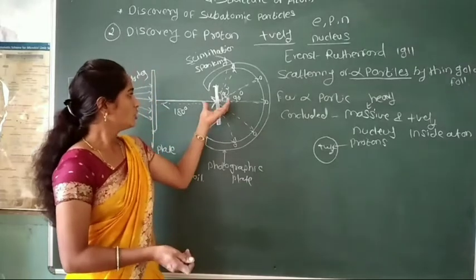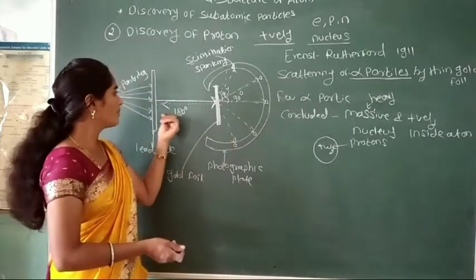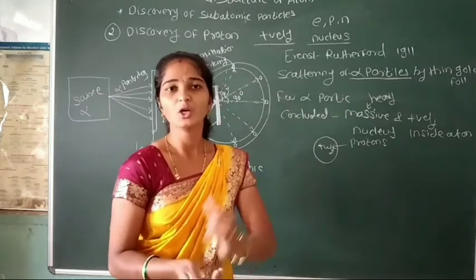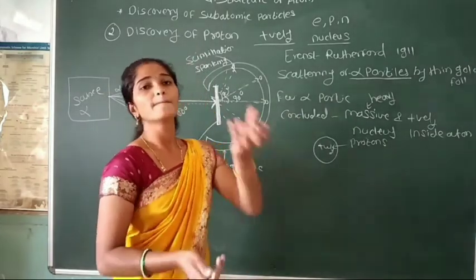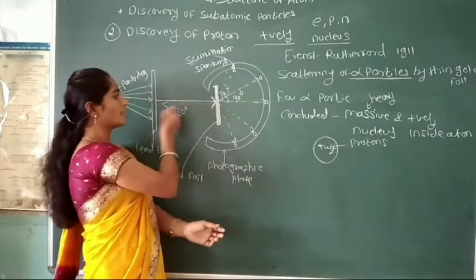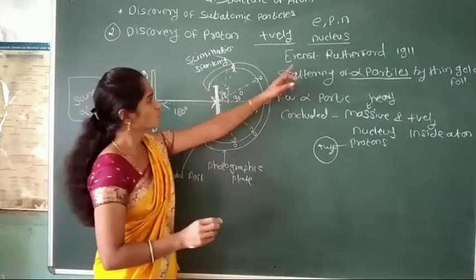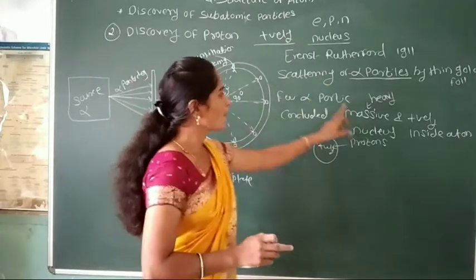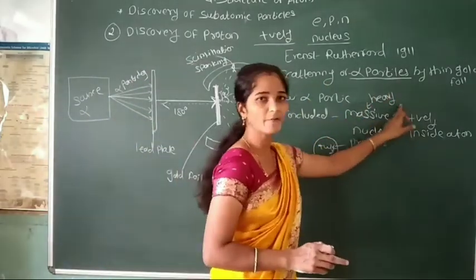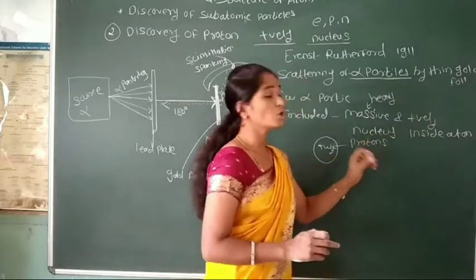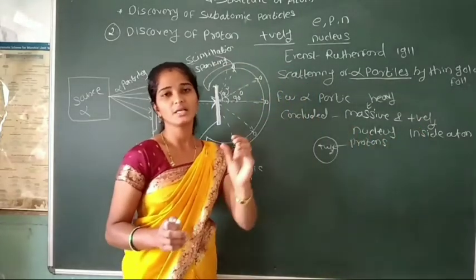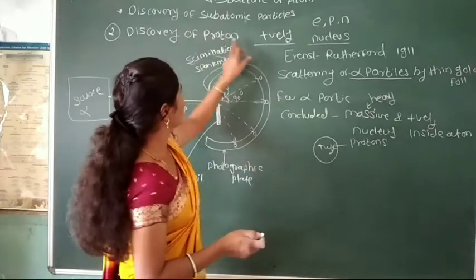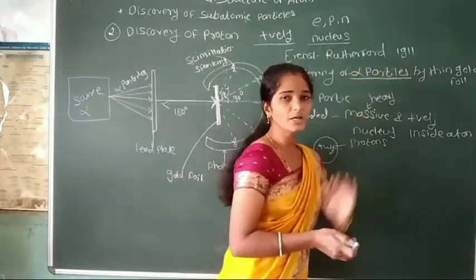Here, the thin gold foil is used and the alpha particles strike or are bombarded on this thin gold foil. Few alpha particles are back-deflected. Therefore, Rutherford concluded that there exists a massive — meaning heavy — and positively charged nucleus present inside the atom. This is the discovery of proton in 1911.